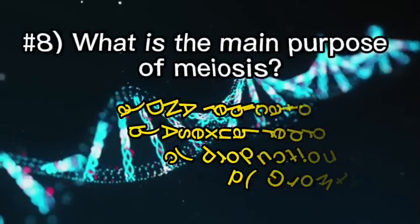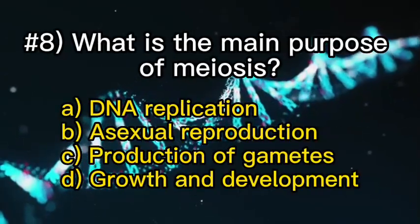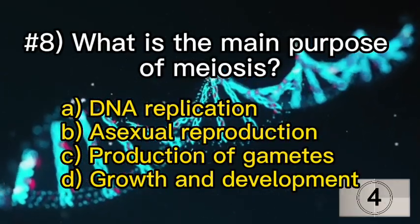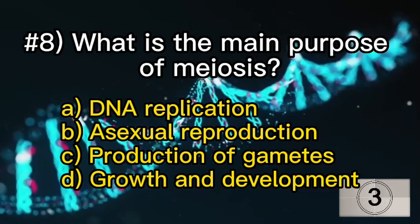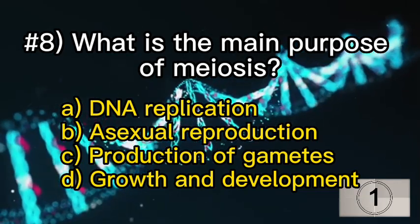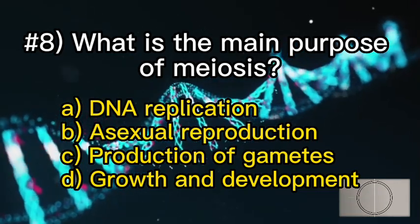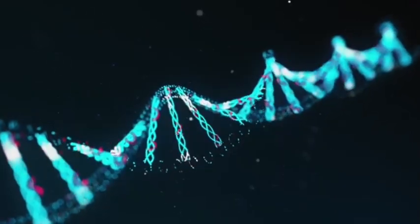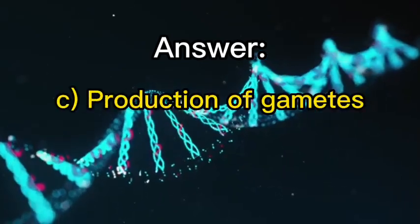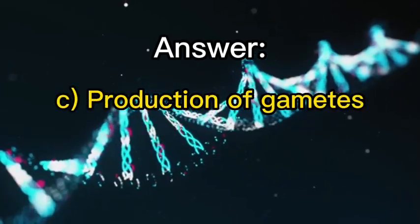Number eight: what is the main purpose of meiosis? C — production of gametes.